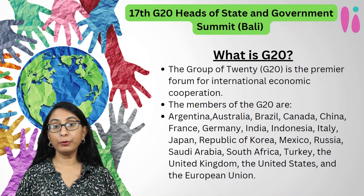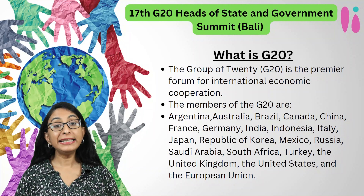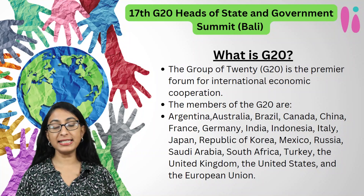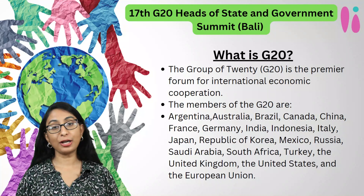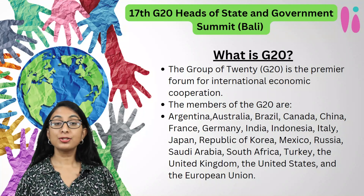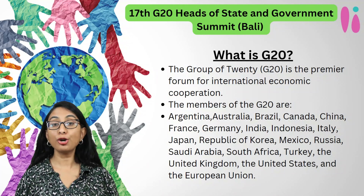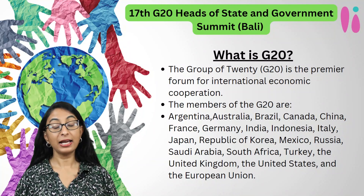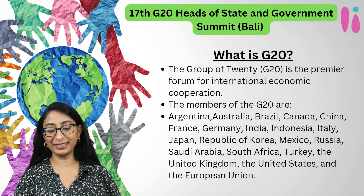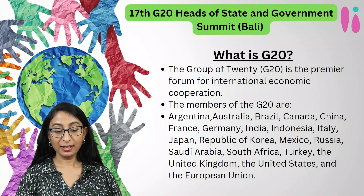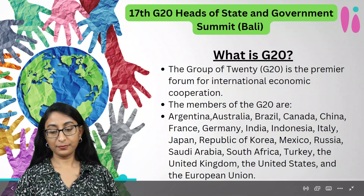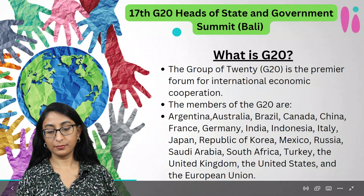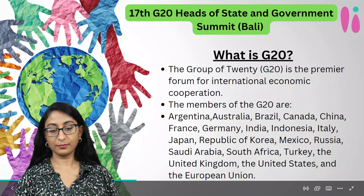Ever since the G20 was formed in 1999, meetings have been organized every year without fail. However, the leaders of the G20 countries started meeting in the summit only since 2008. In addition to the summit, we also have other meetings, which we shall discuss now.